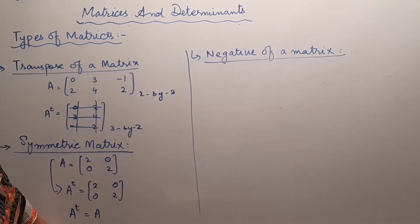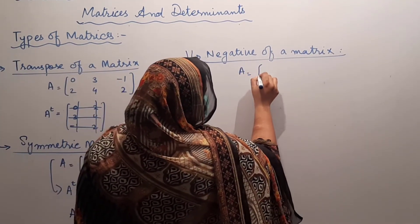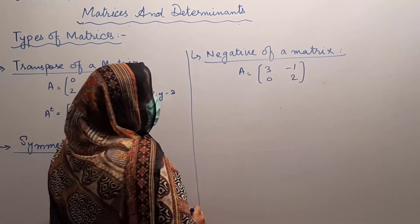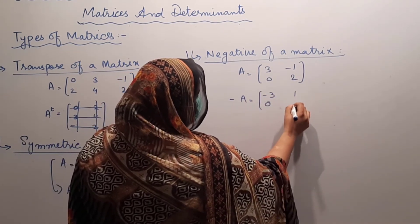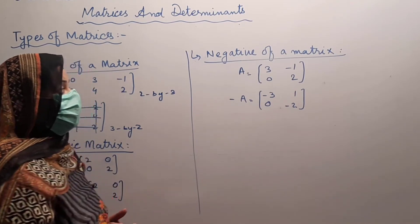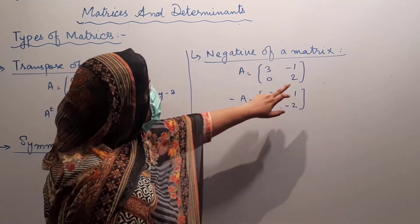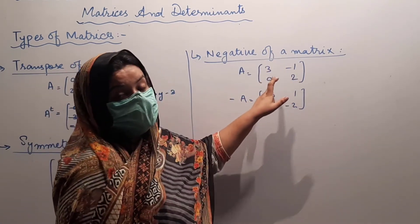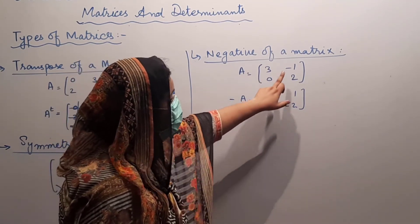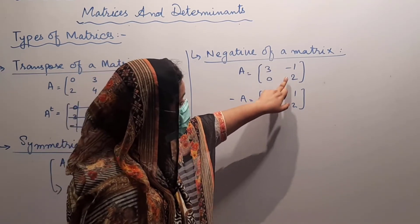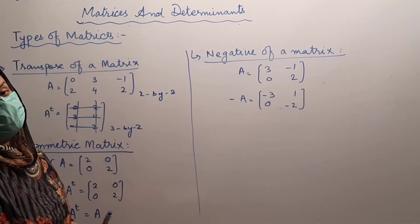Now students, what do you mean by negative of a matrix? If A is a matrix like 3, 0, minus 1, 2 — the negative of a matrix means minus A, like minus 3, 0, 1, and minus 2. This is known as the negative of the matrix.